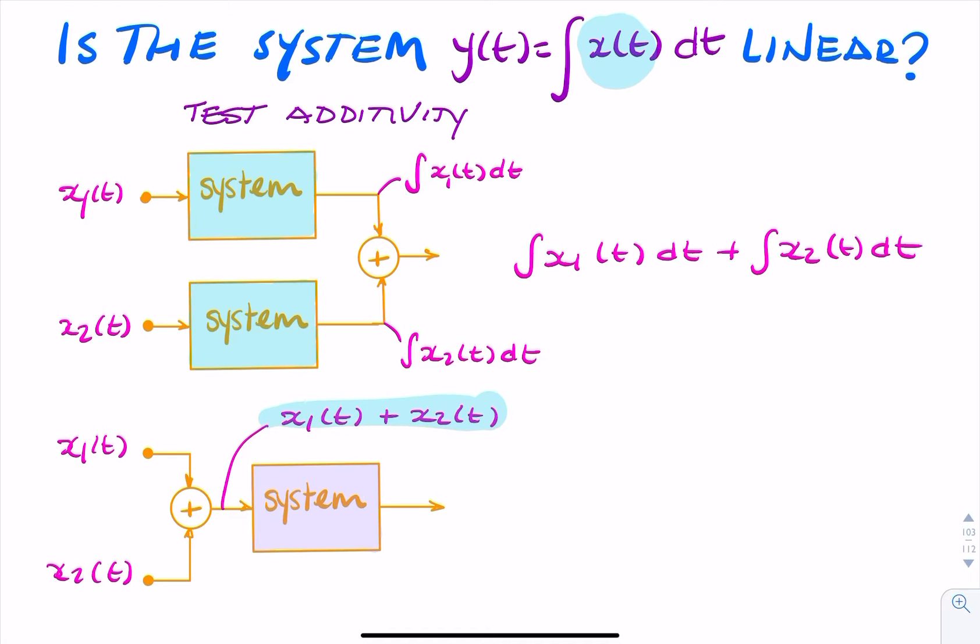So the output of this system will simply be the integral of the input, which is x1 of t plus x2 of t dt.